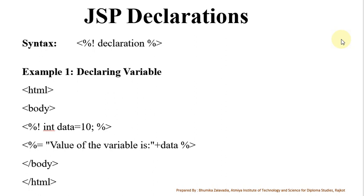This is the JSP declaration tag. The syntax to declare anything is the JSP tag with an exclamation sign in your declaration. You are able to declare variables as well as methods. This is an example of how you can declare a variable.